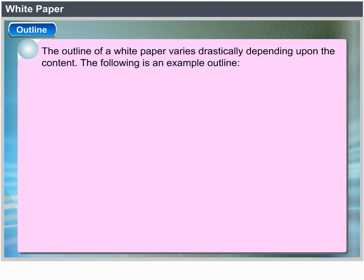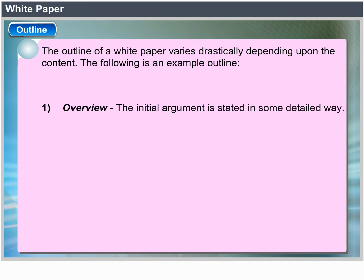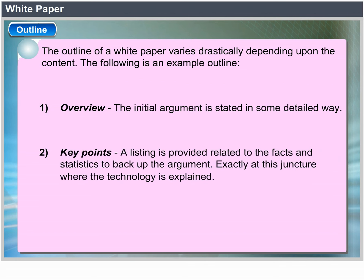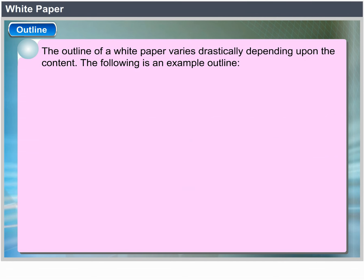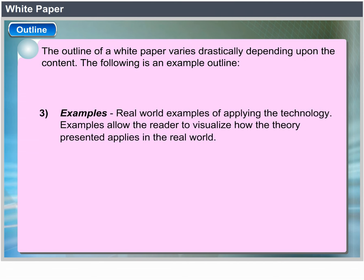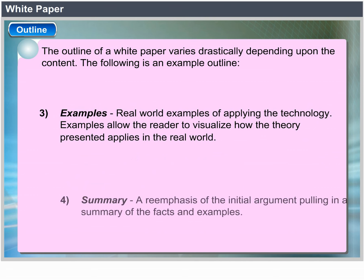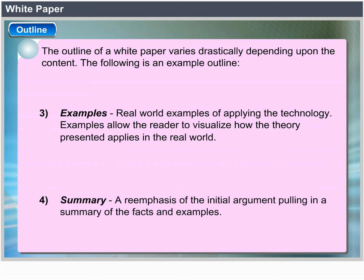The following is an example outline. Overview: The initial argument is stated in some detail. Key Points: A listing of facts and statistics to back up the argument — this is where the technology is explained. Examples: Real-world examples of applying the technology, allowing the reader to visualize how the theory presented applies in the real world. Summary: A restatement of the initial argument pulling in a summary of the facts and examples.